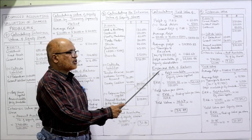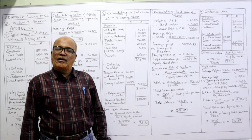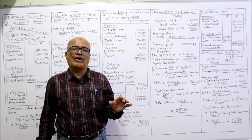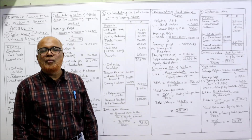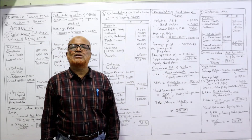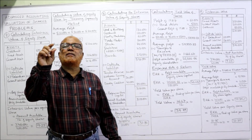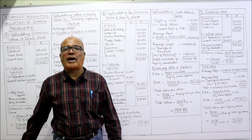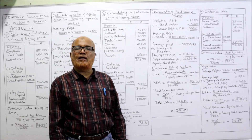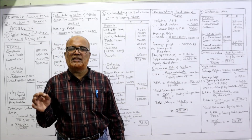Now first we need ERR (expected rate of return). Formula: profit available ÷ equity share capital × 100. So 46,666.66 ÷ 1 lakh × 100 = 46.67%. This is the ERR. Now yield value per share: ERR ÷ NRR × paid-up value per share = 46.67 ÷ 12 × 10 = 38.89. This is the yield value of the share.